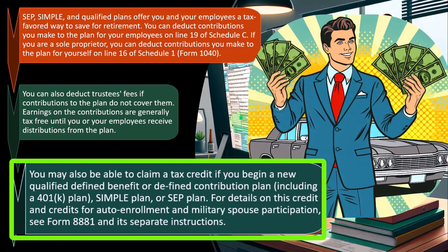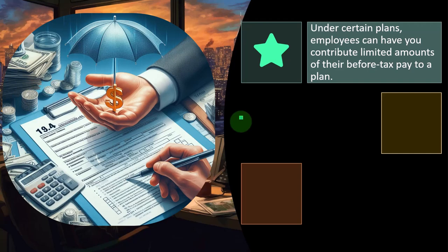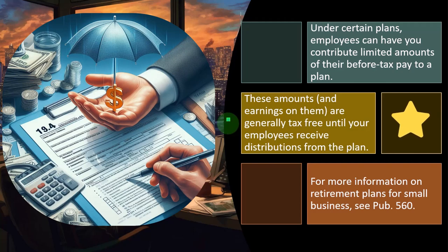You may also be able to claim a tax credit if you begin a new qualified defined benefit or defined contribution plan — including a 401k, SIMPLE, or SEP plan. For details on this credit, and credits for auto enrollment and military spouse participation, see Form 8881 and its separate instructions. Under certain plans, employees can have you contribute limited amounts of their before-tax pay, and those amounts and earnings are generally tax-free until distributions are received.